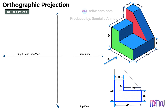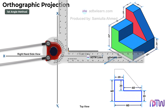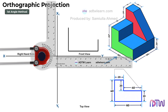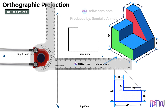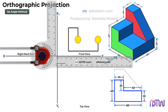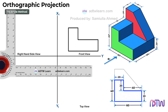Let's draw this visible section of the front view. Take a drafter and draw a horizontal line of 60 millimeters. Draw a 40 millimeters vertical line from this endpoint. Next, draw a vertical line of 20 millimeters from this point. After this, draw a 20 millimeters horizontal line from this point. Next, draw a vertical line of 20 millimeters from this point. And at the end, join these two points with a horizontal line. Therefore, we got this section of the front view.